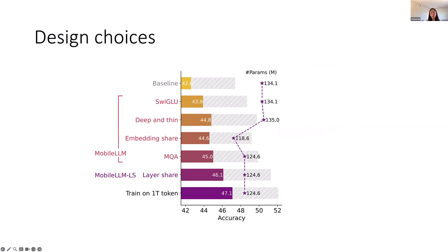In the design of mobile LLMs, we first experimented with various techniques proposed in super-billion-parameter models and identified three techniques truly beneficial for sub-billion-sized models: SwiGLU, embedding sharing, and grouped query attention. We built a strong baseline by integrating these techniques. Additionally, we proposed using deeper architectures and developed an immediate blockwise layer-sharing method to further boost accuracy without increasing model size.